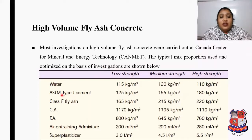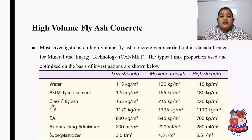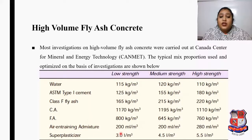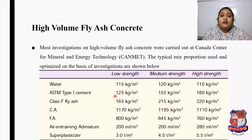For low strength concrete, the mix proportions are: water 115 kg/m³, ASTM Type 1 cement 125 kg/m³, Class F fly ash 165 kg/m³, coarse aggregate 1170 kg/m³, fine aggregate 800 kg/m³, air-entraining admixture 200 ml/m³, and super plasticizer 3 litres/m³. These quantities are responsible for low strength of concrete as per the investigation data.